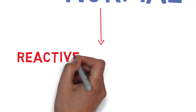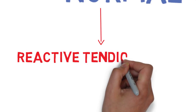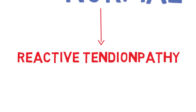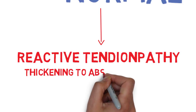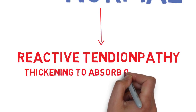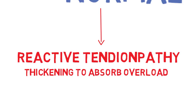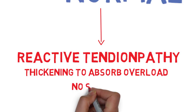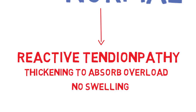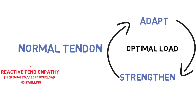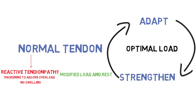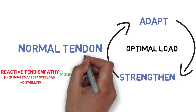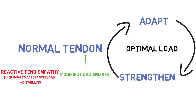The first stage of tendinopathy is called a reactive tendinopathy. At this stage, there won't be inflammation, but there will be what's described as a short-term thickening and stiffening of the tendon. This is basically happening because your tendon is trying to cope with the stress that you're giving it. After a change in load and a bit of time off, you can normally go back to full health fairly quickly.